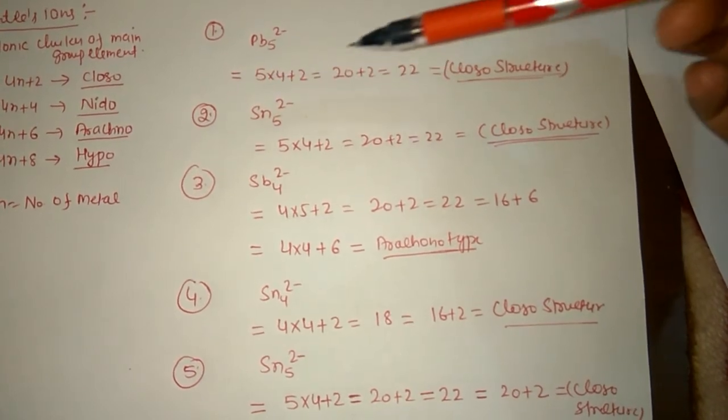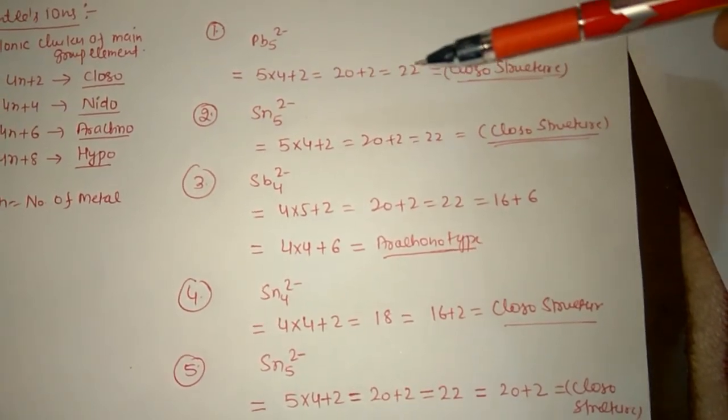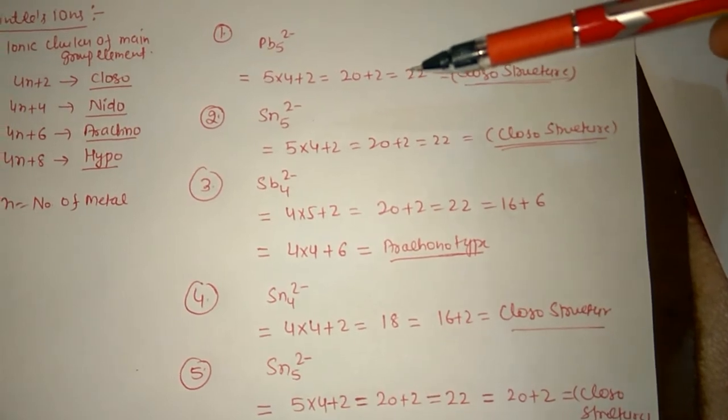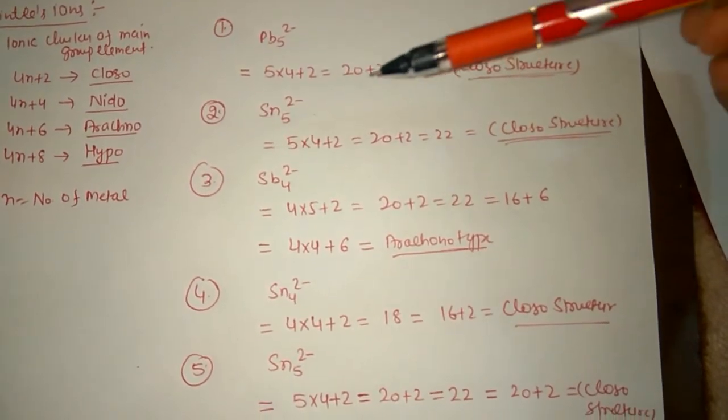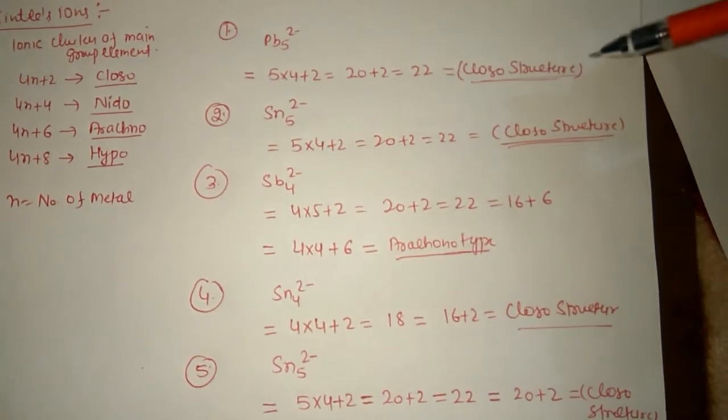That is equal to 20+2, which is equal to 22. Now we can write this as 4n+2, that is 20+2. Therefore, it has a clozo structure.